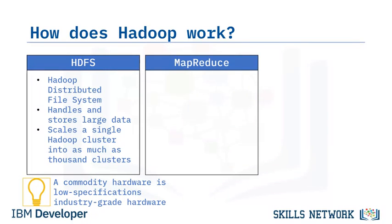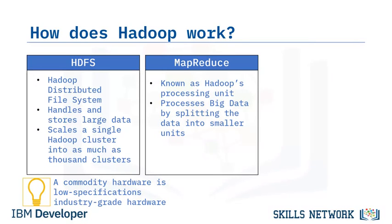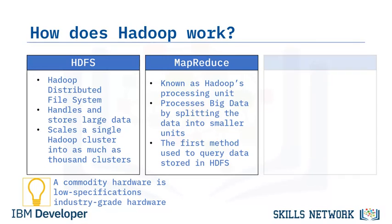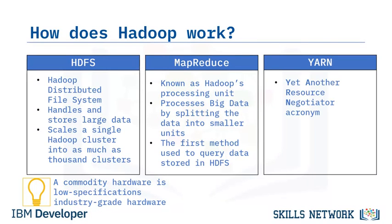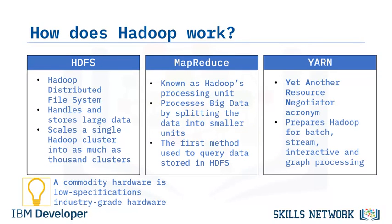The next component is MapReduce, which is a processing unit of Hadoop and an important core component to the Hadoop framework. MapReduce processes data by splitting large amounts of data into smaller units and processes them simultaneously. For a while, MapReduce was the only way to access the data stored in the HDFS, though there are now other systems like Hive and Pig. The last component is YARN, short for Yet Another Resource Negotiator. YARN prepares the RAM and CPU for Hadoop to run data in batch processing, stream processing, interactive processing, and graph processing, which are stored in HDFS.